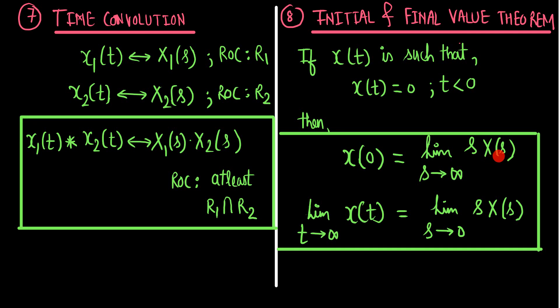To summarize: to find the initial value, multiply the Laplace transform by s and take s → ∞. To find the final value, multiply by s and take s → 0. These theorems hold only when x(t) satisfies the constraint of being 0 for t < 0. We shall see more about the Laplace transform in the next module.